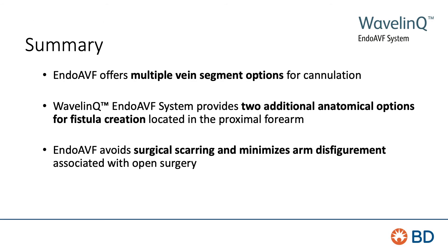In summary, the endo-AVF offers multiple potential vein segments for cannulation. The Wavelink Endo-AVF system provides two additional proximal forearm locations for AV fistula creation. Endo-AVF avoids surgical scarring and minimizes arm disfigurement associated with open surgery.